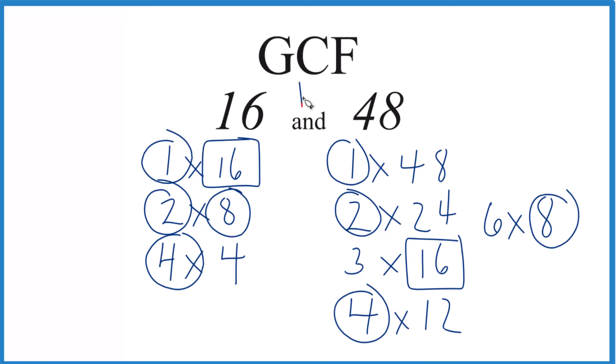So in answer to our question, the GCF for 16 and 48, that's 16. There are other ways you could do this like prime factorization, but unless you have some pretty big numbers, this works pretty well. This is Dr. B. Thanks for watching.